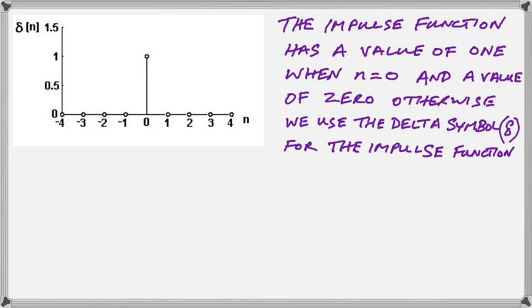What we're looking at here is the impulse function. It has a single number with a value of 1, which is located at n equals 0 in the time stream, and the value is 0 everywhere else. We use this impulse function as an input into a DSP and monitor the behavior of the DSP as a result of this impulse input. We use the delta symbol to signify the impulse function.